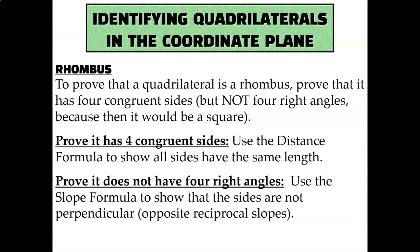This unit we've learned about rhombuses. They are parallelograms that have four congruent sides. So if you're going to prove that a quadrilateral is a rhombus, you could use the distance formula to show that all four sides have the same length. But if you want to prove that it's just a rhombus and not a square, you have to go one step further and use the slope formula to show that it doesn't have four right angles.